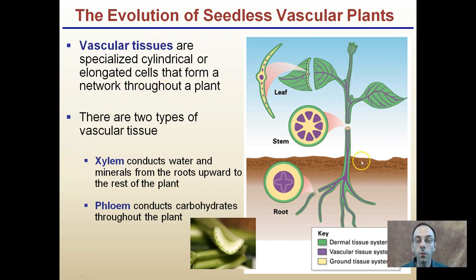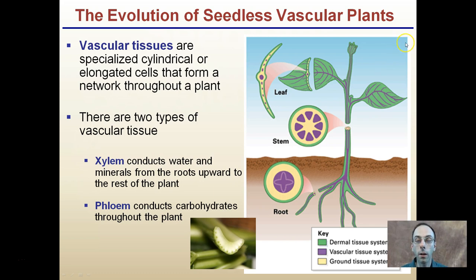Think of those like the vessels going through the plant. There are two types of vascular tissue. The first type is called xylem, and this conducts water and minerals from the roots upward to the rest of the plant. Xylem works mainly in one direction, starting at the roots, going up to what we call the shoots, and then ultimately the leaves.